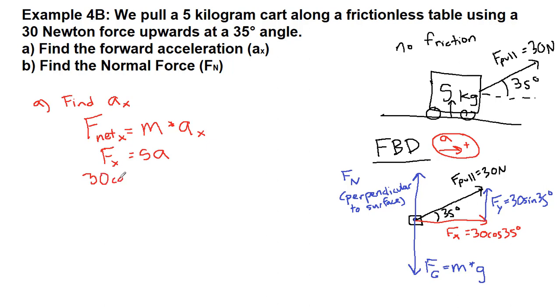So we have 30 cosine 35 degrees. If I divide both sides by five to get a all by itself, then I get 30 cosine 35 degrees divided by five, and I can plug all of that into my calculator. I get 4.91 meters per second squared. We've already drawn it pointing to the right so we don't really need to indicate that further, but we can make a note to ourselves that acceleration is always a vector and so it does have direction information, it's just that we've already drawn it here.